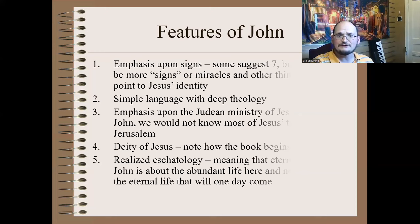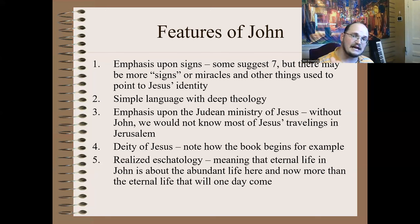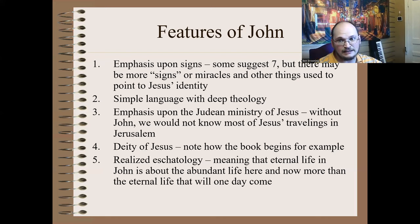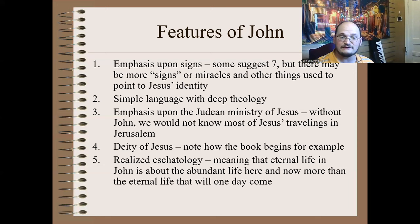Key features of John: one major feature is the use of signs — you have seven signs or miracles in John. Instead of many smaller miracles, each sign has a very important function. John also tends to have very simple language — it's one of the first texts students translate in Greek precisely because of that simplicity, even though it carries a deep theology. It emphasizes Jesus's ministry in Judea and Jerusalem, uniquely contrasting the other Gospels. The focus on the deity of Christ is very strong.